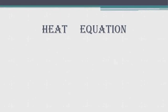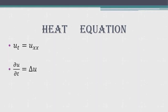The next one is the heat equation. The heat equation is u_t equals u_xx, where x is the spatial coordinate and t represents time as usual. The heat equation is often written more compactly as the partial derivative of u with respect to t equals the Laplacian of u (del u). The heat equation was first studied by Fourier around 1800, when he was studying heat conduction.